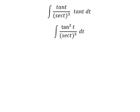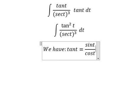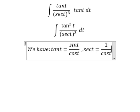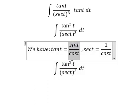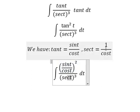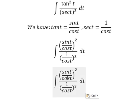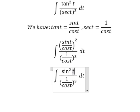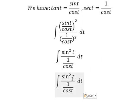We have the formula here. So we need to transform this expression into this one, and this one equals this one. So we can simplify cos²(t) times cos²(t), and I will put cos²(t) here.